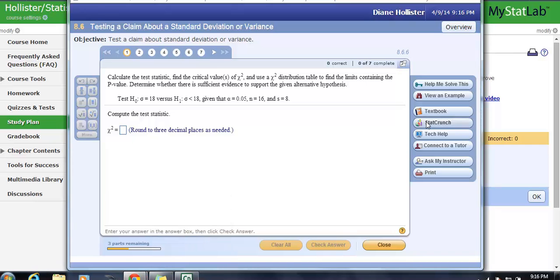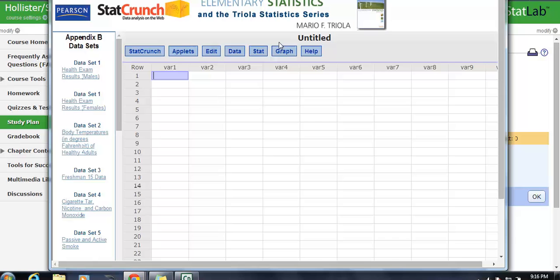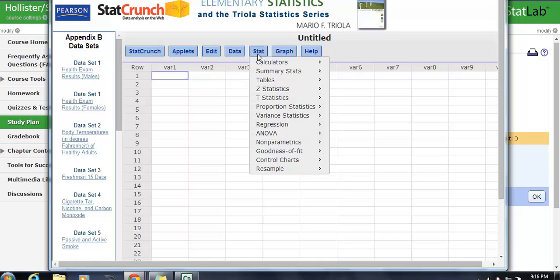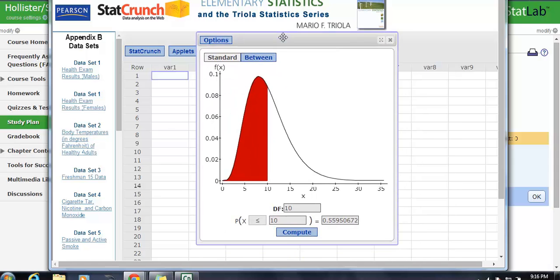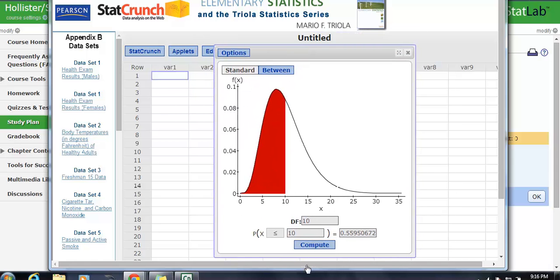So we're going to go back to our StatCrunch. We're going to go to our calculator. We're going to go to chi-squared. And in this particular case, our degrees of freedom is 15.